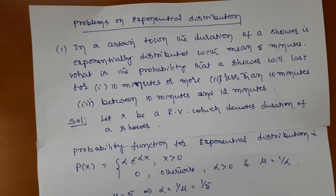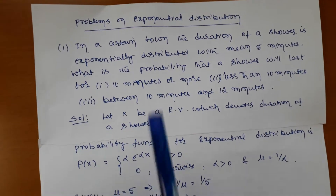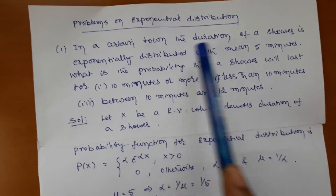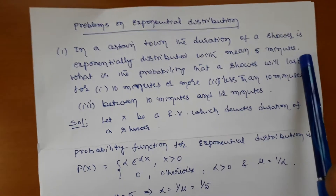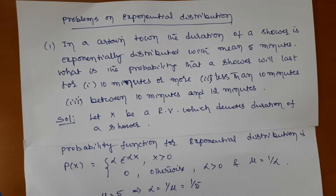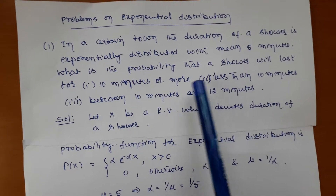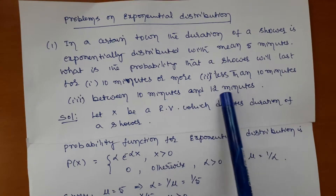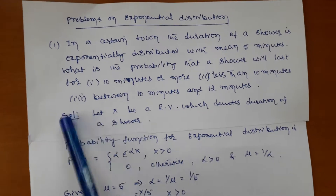Welcome to the second class on exponential distribution. We will discuss some problems based on exponential distribution. The first problem states: in a certain town, the duration of a shower is exponentially distributed with a mean of five minutes. We need to find the probability that a shower will last for three cases: 10 minutes or more, less than 10 minutes, and between 10 and 12 minutes.